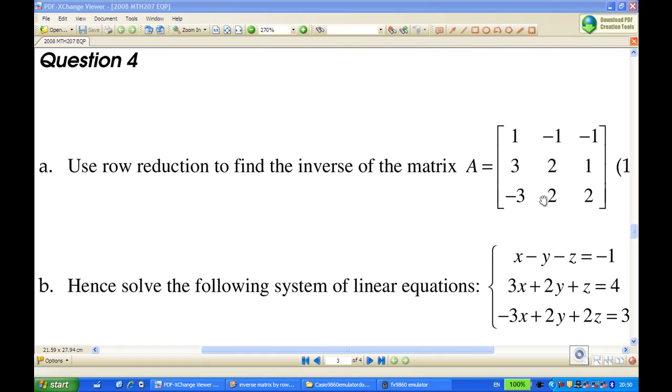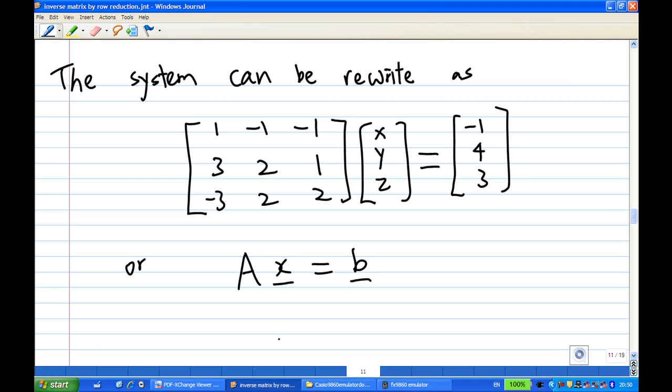The reason is because the system of linear equations can be written in a matrix form. Let's see how it looks like. This system can be written as a matrix A times x equals B where A is 1 minus 1 minus 1, 3, 2, 1, minus 3, 2, 2 is A. And the x, in this case, is x, y, z as a column. The B is minus 1, 4, 3.